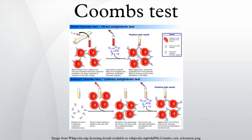The Coombs test was first described in 1945 by Cambridge immunologists Robin Coombs, Arthur Mourant, and Rob Race. Historically it was done in test tubes. Today it is commonly done using microarray and gel technology.